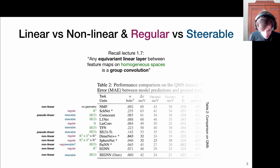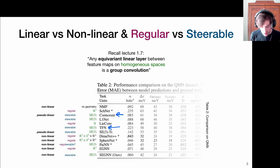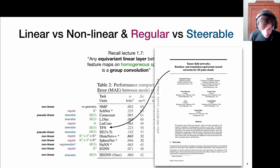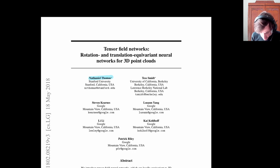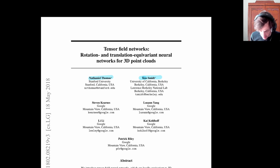Now we'll focus on the steerable methods. When talking about steerable methods for molecular data, Tensor Field Networks and Cormorant are really the starting point — many methods build or expand on variations of these two. Let me start with the Tensor Field Networks paper, which presents a method for rotation and translation equivariant neural networks for 3D point clouds, written by Nathaniel Thomas and Tess Smidt.